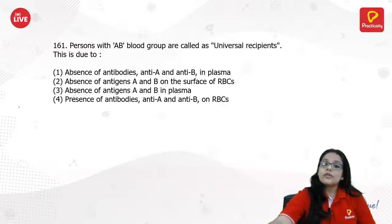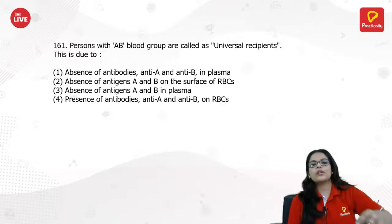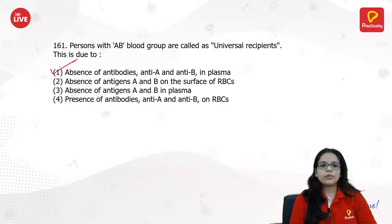Persons with AB blood group are called universal recipients because they don't have antibodies — whenever there is a foreign blood type, they don't have antibodies to reject it, so they can take any kind of blood group.